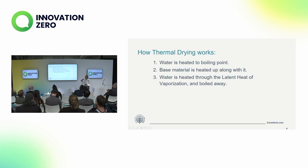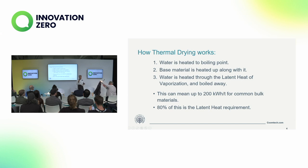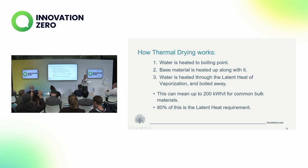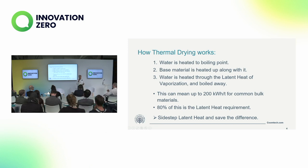You boil the water — you take it through the latent heat of vaporization — that's very energy hungry, but it works. That can mean typically something like 200 kilowatt hours per ton to dry things like sand or cement. Most of that is taking water you've heated up to boiling point and turning it into a gas. If you didn't have to do that, if you could avoid boiling the kettle dry, you'd have a lot of energy budget free to do other things with. And that's what we've done.